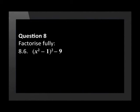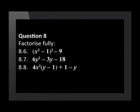8.6 is x squared minus 1 squared minus 9. 8.7 is 6y squared minus 3y minus 18. 8.8 is x squared minus 26x. 8.9 is 6y squared minus 3y minus 18. 8.10 is p plus q into brackets a plus b plus brackets a plus b into brackets minus p minus q.